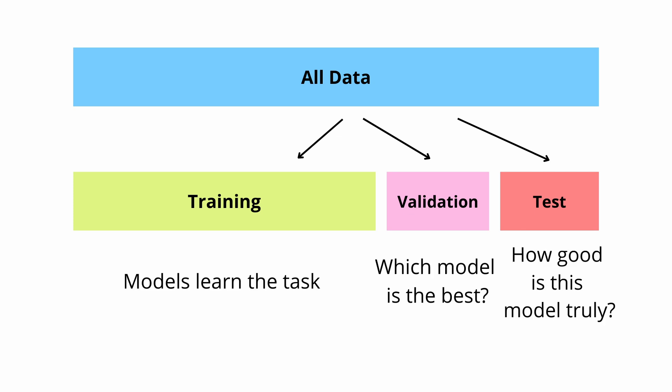First off a quick overview. The training data set is used for the models to learn the task. The validation data set is used by you as a developer to decide which model is the best for the task and then we still keep a holdout test data set to see how good is this model truly.